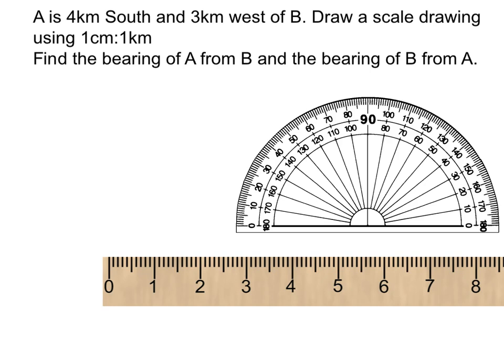Okay, we've got here an example of a question where we're asked to make a small scale drawing. We're told that A is 4km south and 3km west of B. We have to draw a scale drawing using 1cm equal to 1km, and then we have to find the bearing of A from B and the bearing of B from A.